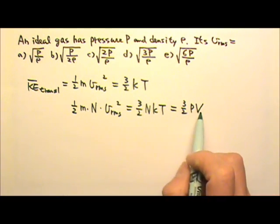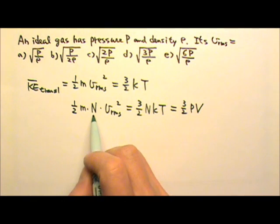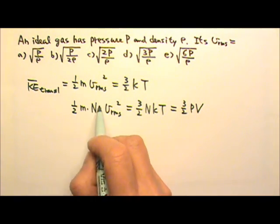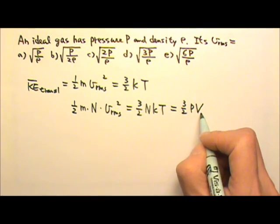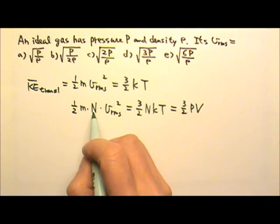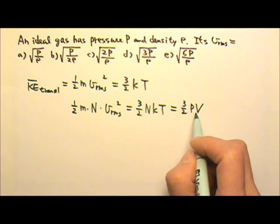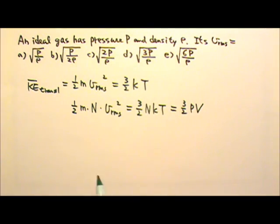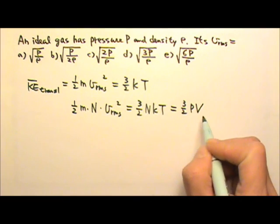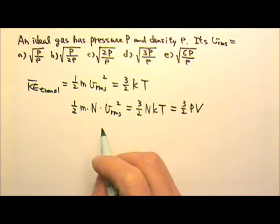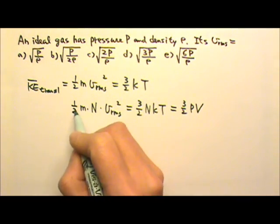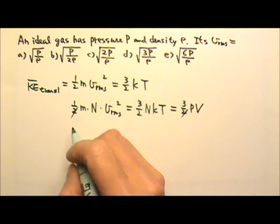Now we have the molecular mass times the number of molecules, which is the total mass. And here we have volume. If I divide the total mass by the volume, I get density. So I'm going to divide by the volume on both sides, and I can also cancel the one-half.